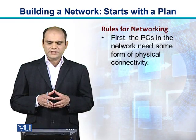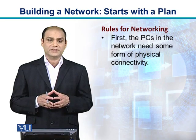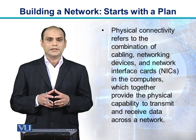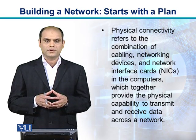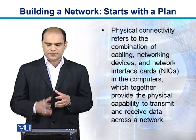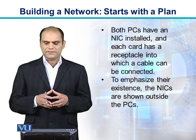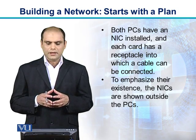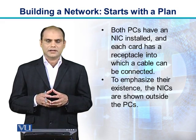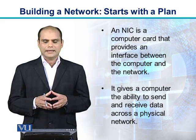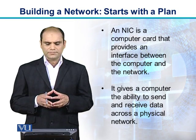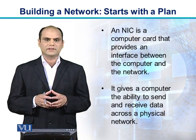Rules for networking: first, the PCs in the network need some form of physical connectivity. Physical connectivity refers to the combination of cabling, networking devices, and network interface cards in the computers, which together provide the physical capability to transmit and receive data across a network. Both PCs have an NIC installed, and each card has a receptacle into which a cable can be connected. An NIC is a computer card that provides an interface between the computer and the network, giving it the ability to send and receive data.